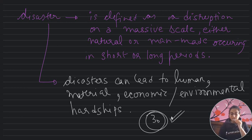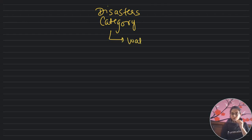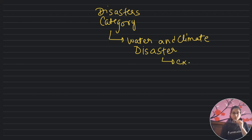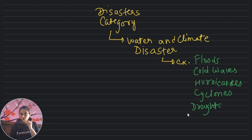We can classify disasters into different categories. The first category is water and climate disasters. Examples include floods, cold waves, hurricanes, cyclones, and droughts — because these are climate-based disasters. The second category is geological disasters. Examples include landslides, volcanic eruptions, earthquakes, and tornadoes.